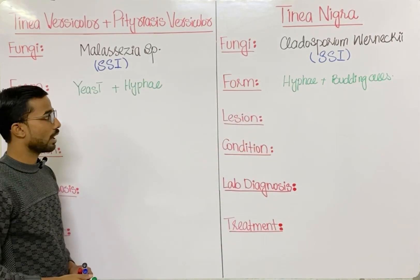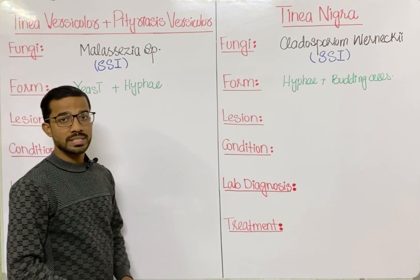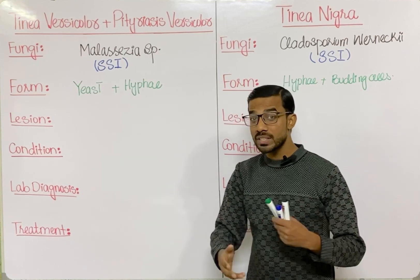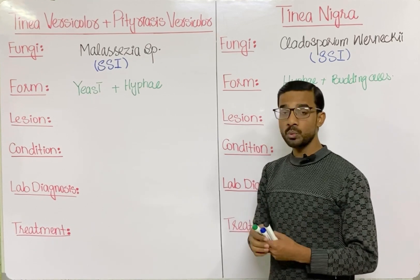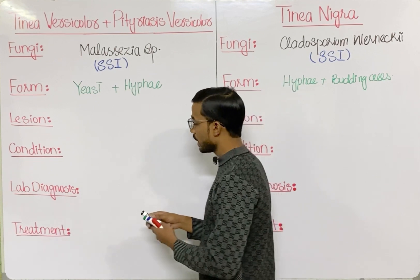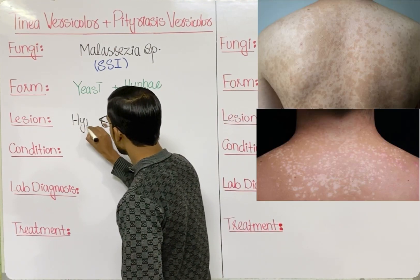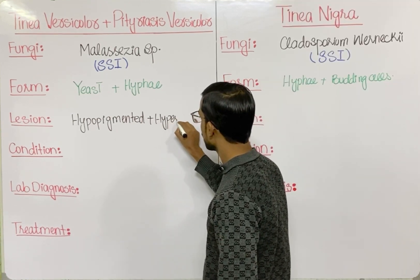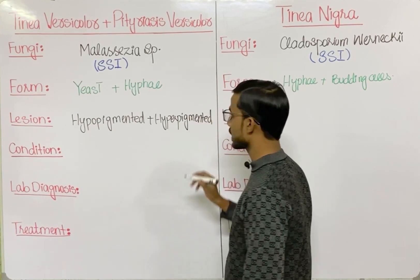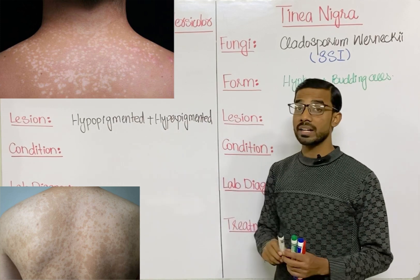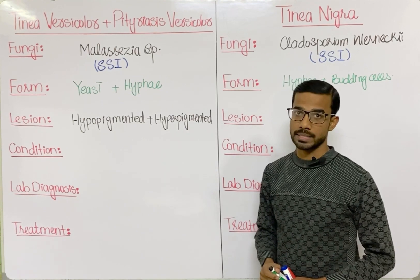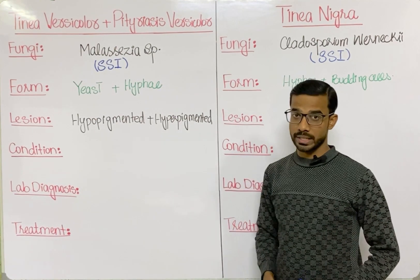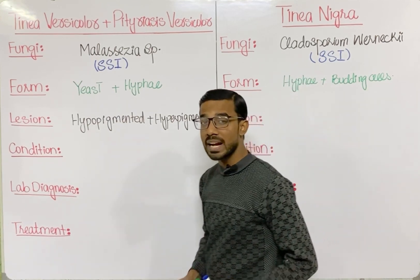The word 'versicolor' means variations in color, so in the lesions of Tinea Versicolor you will see two types: hypopigmented and hyperpigmented lesions — light-colored and dark-colored lesions. This condition is mostly related to cosmetics. You can also see itching and scaling, which is characteristic of Tinea Versicolor or Pityriasis Versicolor.